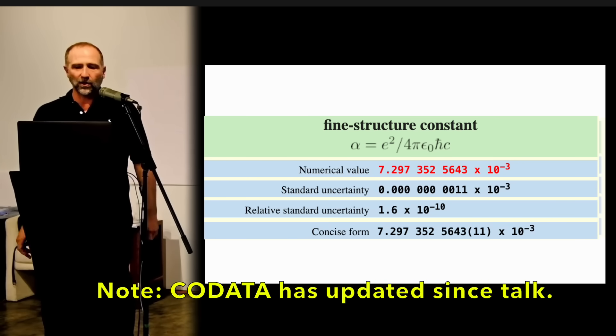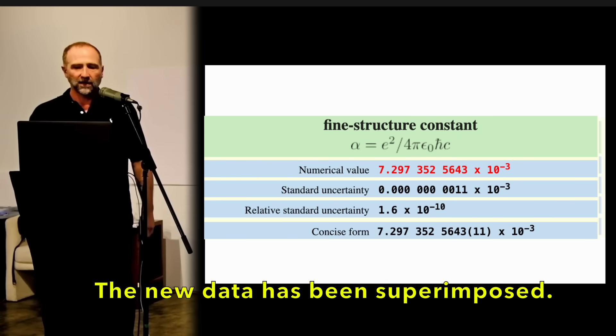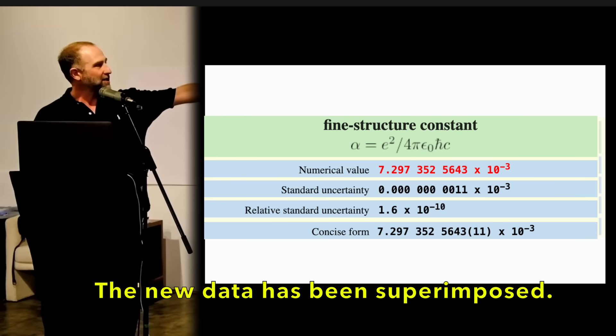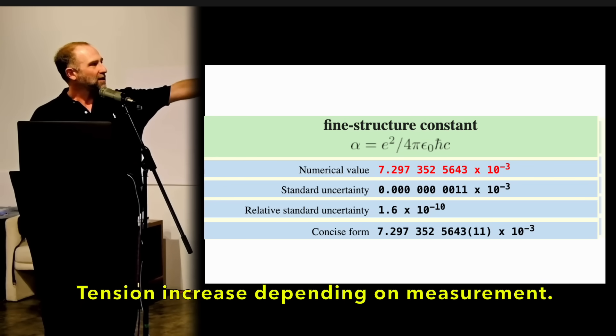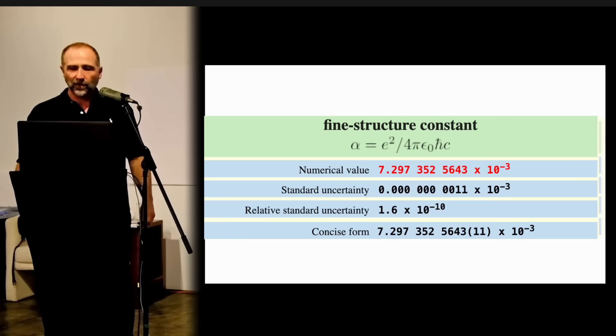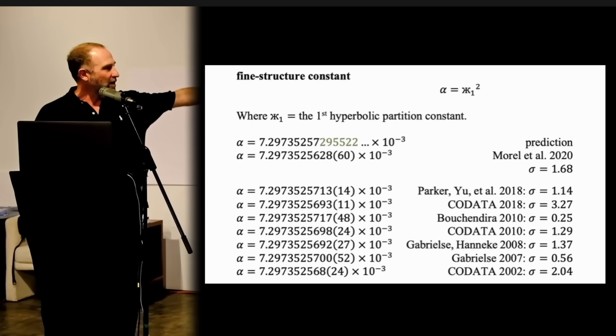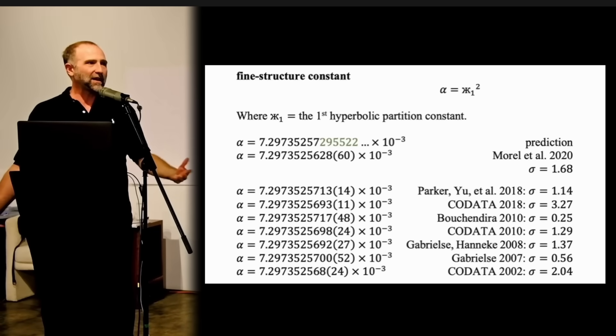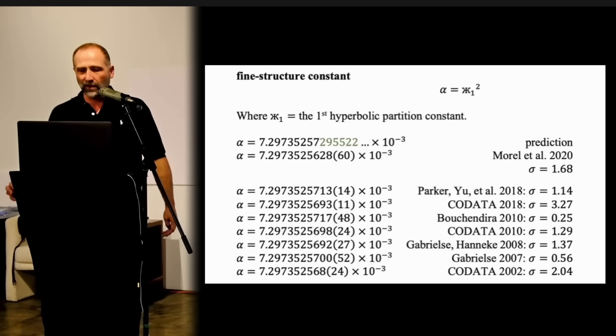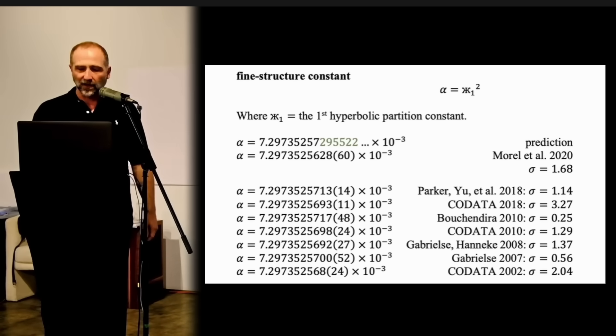Here's the reported number on CODATA right now, with the error bars. The last two nine three digits, they have an error of plus or minus 11 on them. There's also other measurements. In fact, the more recent measurement in 2020 at the top of the second line here, and then there's several other ones that list the number and the error bars. You can see this has been studied by many people. There's even more than this. These are some of the recent ones.